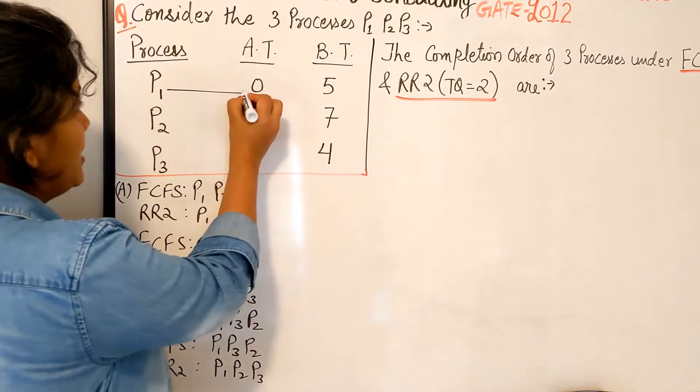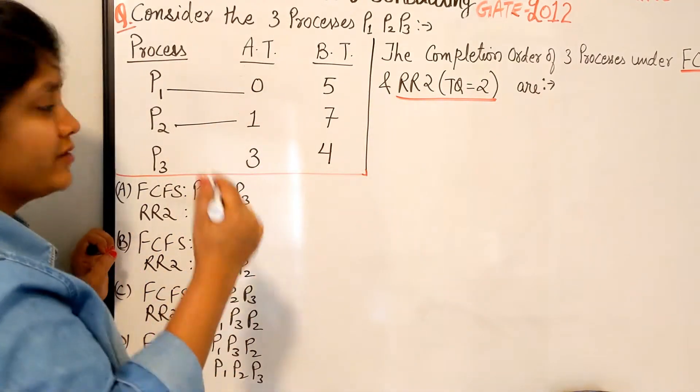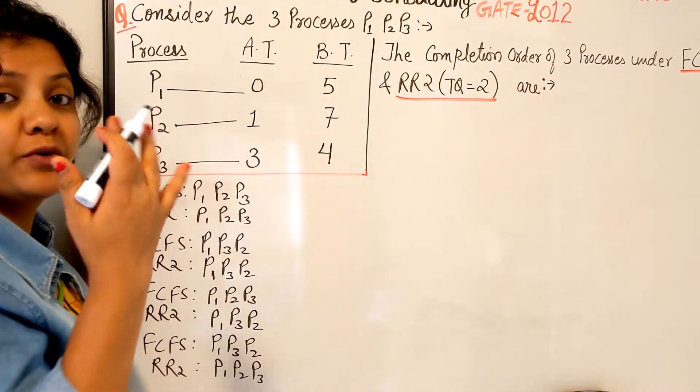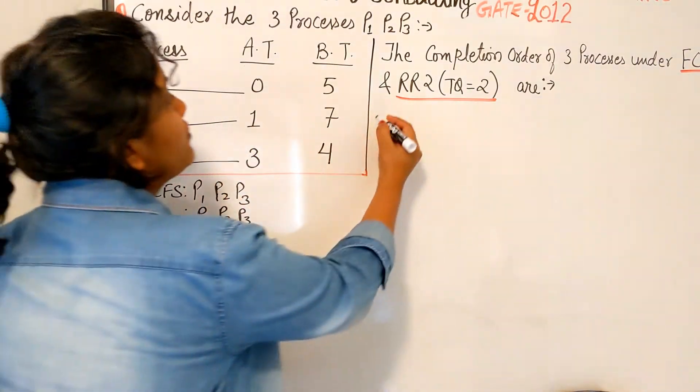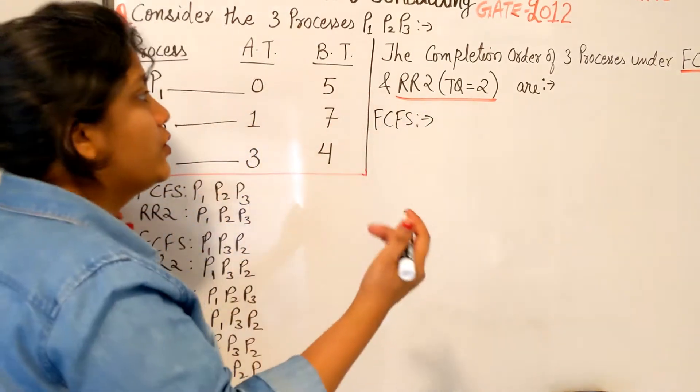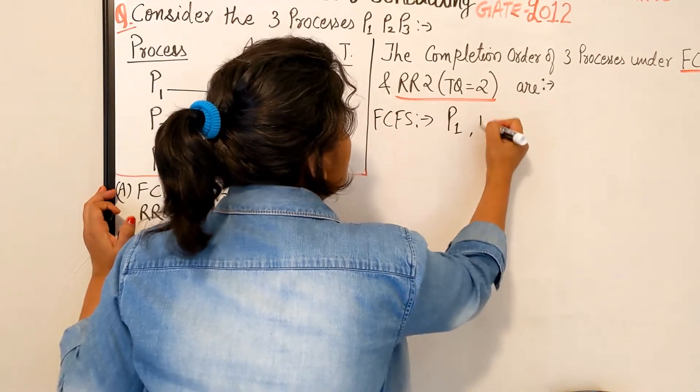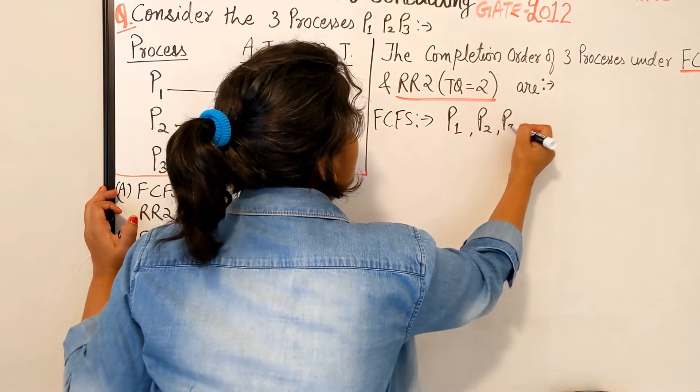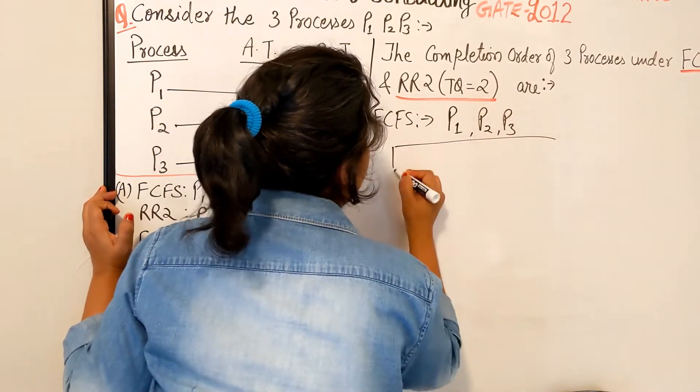The first coming will be executed first, the next coming will be executed next, and the last coming will be executed last. So if I just have to tell you the First Come First Serve order, I easily know the completion order is first P1, then P2, and then P3.